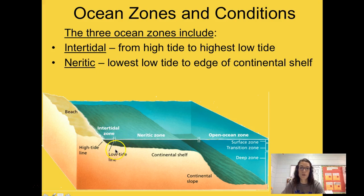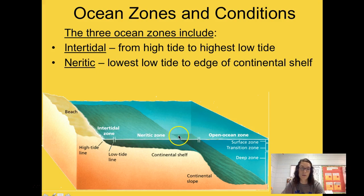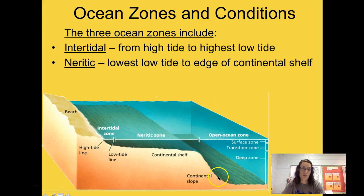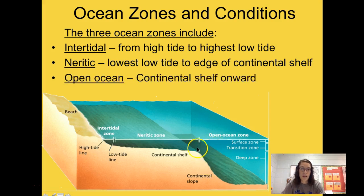The neuritic zone starts where the intertidal zone ends — from the lowest low tide all the way out to the edge of the continental shelf. On some continents, the continental shelf extends about 50 miles, so it's farther than you can really see. The diagram may look shallow, but it gets gradually deeper before a large decline into the open ocean zone.